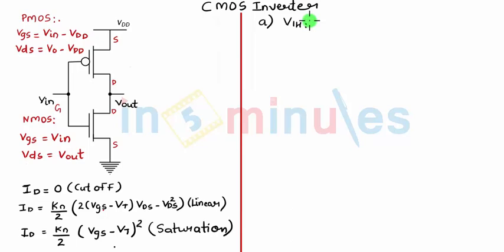We have already seen in the previous clip of a CMOS inverter where we identified the region of operation for NMOS and PMOS transistors for different sets of inputs.